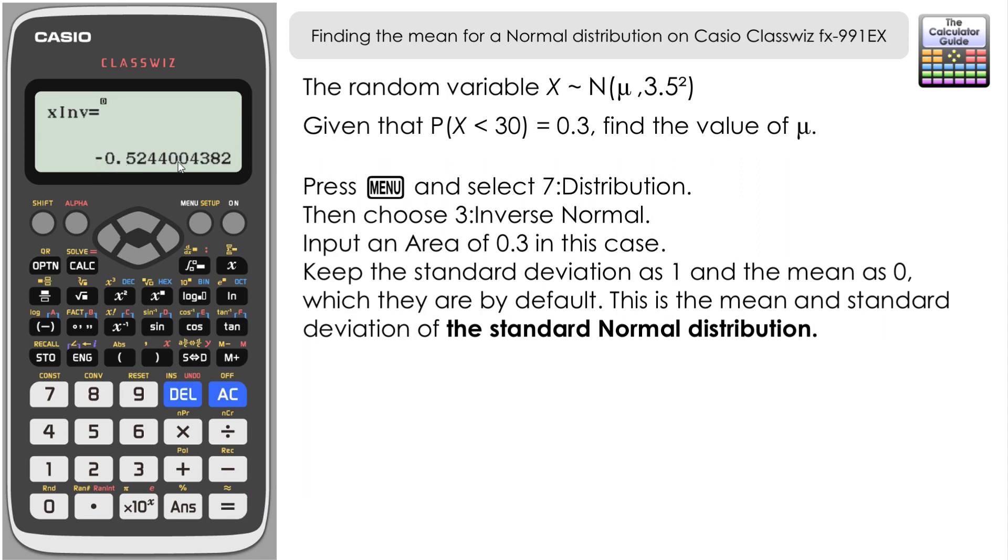Now the value that we have here is the x value for the standard distribution where the probability of being less than this particular value is 0.3. And this is typically known as a z value or a z score which we're going to use with another calculation to be able to find out what the mean of our distribution is.